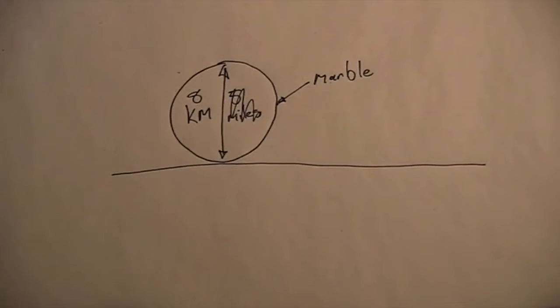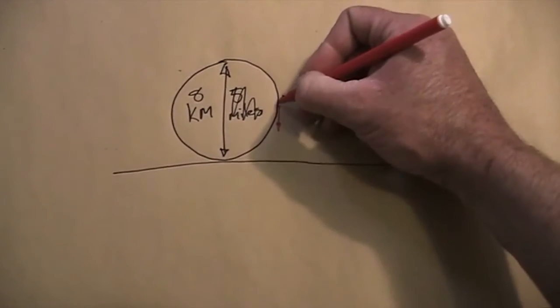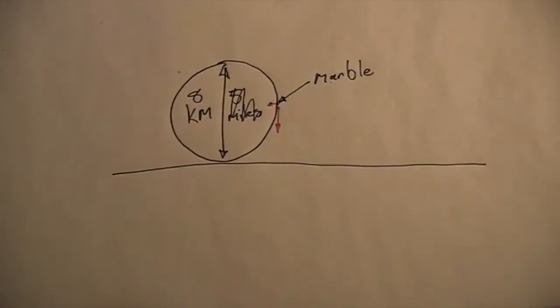To think this through, let's consider the forces acting on the marble at the moment you let it go. There's a gravitational attraction on the marble from both the rock and from the Earth. For now, let's ignore the interaction between the giant rock and the Earth and the ensuing calamity that a five-mile rock suddenly appearing would bring.